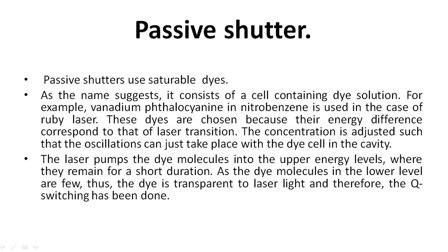Passive shutter: Passive shutters use saturable dyes. As the name suggests, it consists of a cell containing a dye solution — for example, vanadium phthalocyanine in nitrobenzene, which is used in the case of ruby laser. These dyes are chosen because their energy difference corresponds to that of the laser transition. The concentration is adjusted such that oscillations can just take place with the dye cell in the cavity. The laser pumps the dye molecules into the upper energy levels where they remain for a short duration, as the dye molecules in the lower level are few. This dye is transparent to laser light, and therefore Q-switching has been achieved.